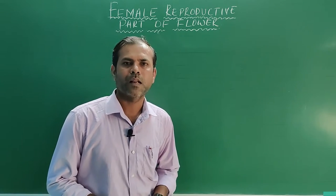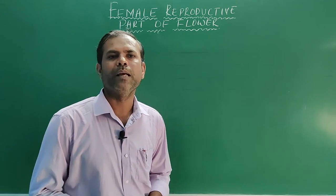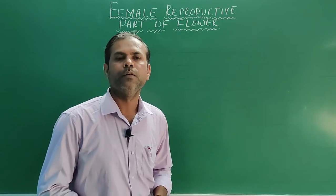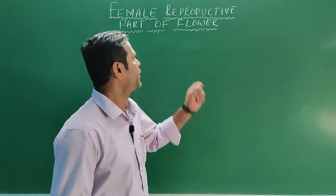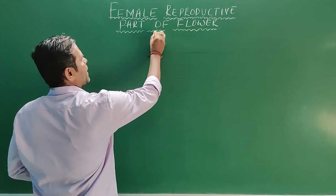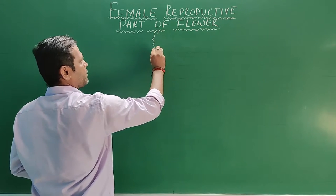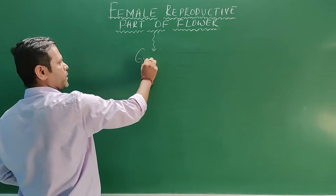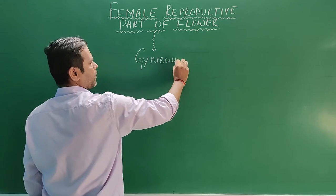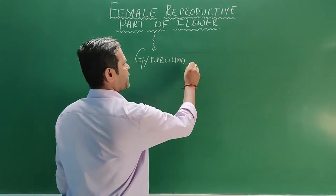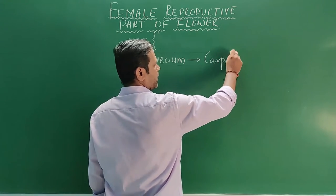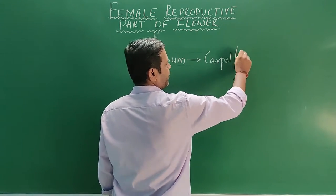Welcome back. In the last class we studied the male reproductive part of the flower. In this class we are going to start with the female reproductive part of the flower. The female reproductive part of the flower is called the gynaecium, and the units of gynaecium are called carpel or pistil.